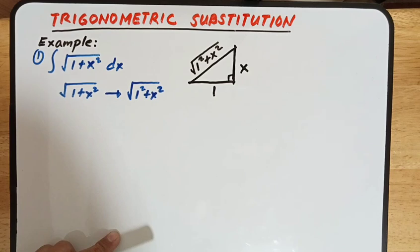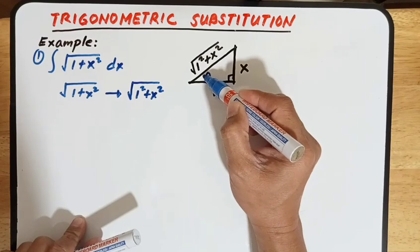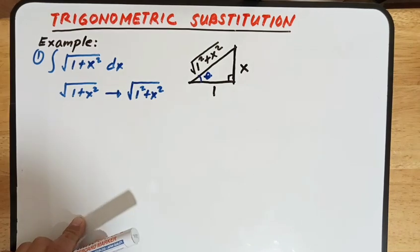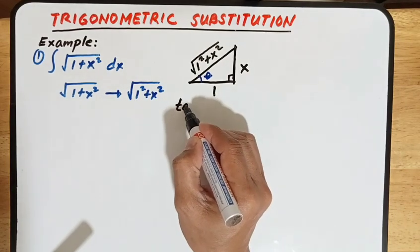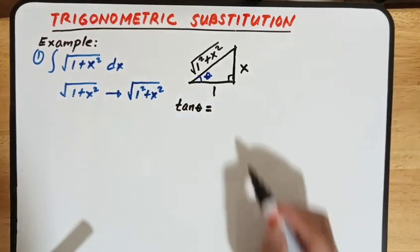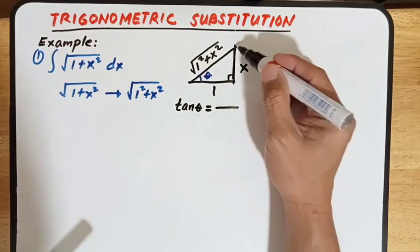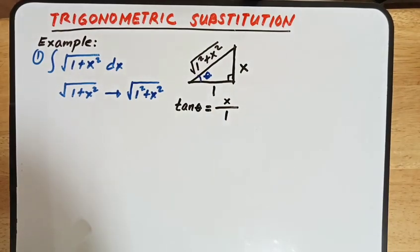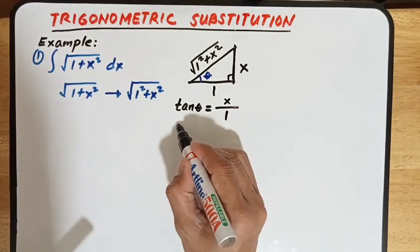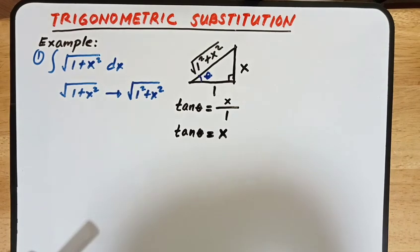Now, if we are going to use tangent — assuming this is our angle theta — the tangent of that angle theta is defined as opposite over adjacent. Our opposite of this angle is x and adjacent is 1, so tangent theta equals x over 1. Therefore, tangent theta is just equal to x.